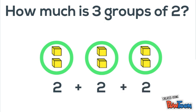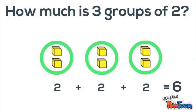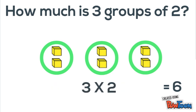When adding the same number repeatedly, you can count by that number. So in our heads we can say two, four, six. So six is our answer. We can represent these groups of questions with the multiplication symbol. We read that and we say three times two. When we say that we mean three groups of two. So we know three times two equals six.